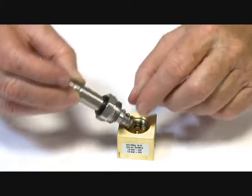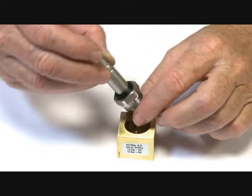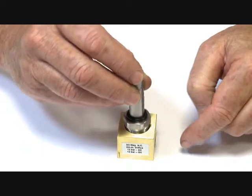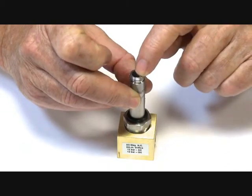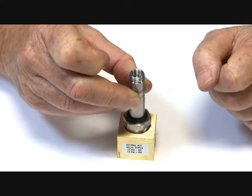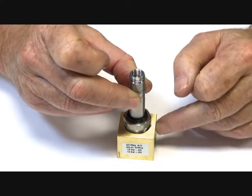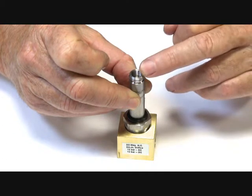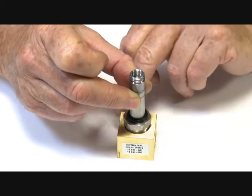When it comes back down and seals off the inlet, the downstream pressure is relieved back up through this exhaust port. So this is a three-way normally closed power to open valve. In the closed position, the downstream pilot is connected to the exhaust and the flow is cut off.